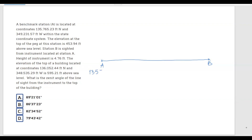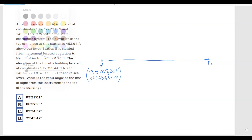Station A is at 135,765.23 north and 349,231.57 west. Moving forward, the elevation at the top of the peg at this station is 453.94 feet. Let me represent that the elevation at station A is 453.94 feet.